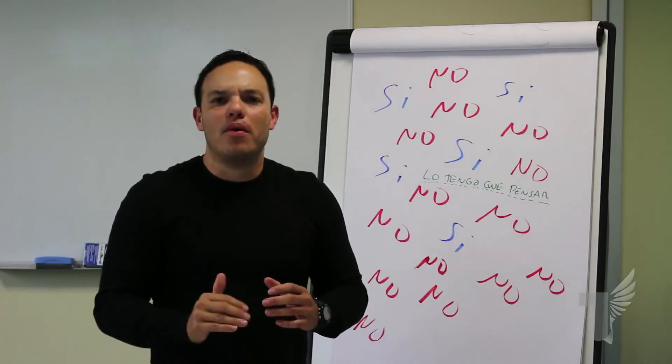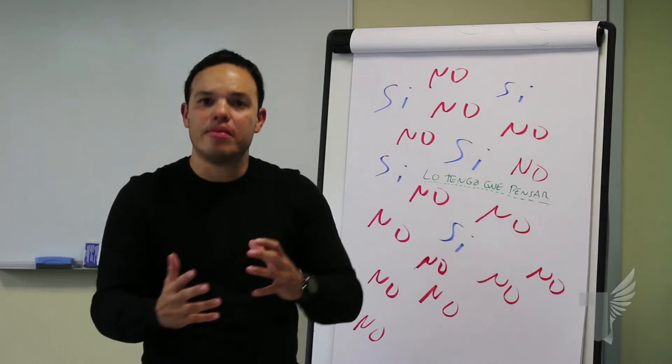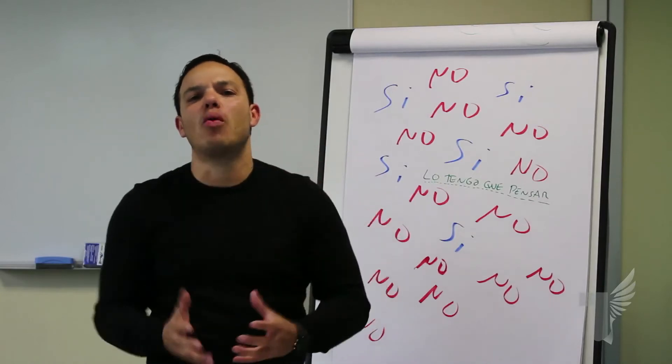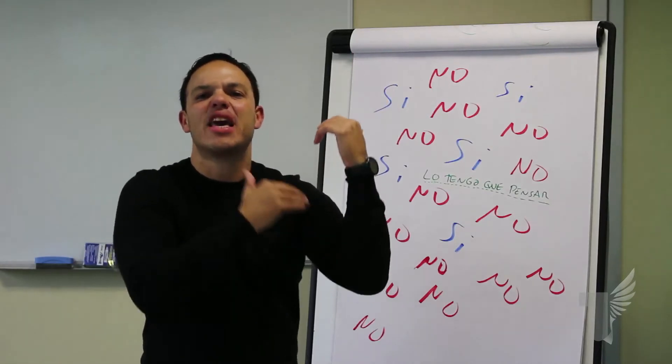And successful people, the only thing that they do is they make decisions. Sometimes the right one. Sometimes the wrong one. But they work on the decision-making muscle.